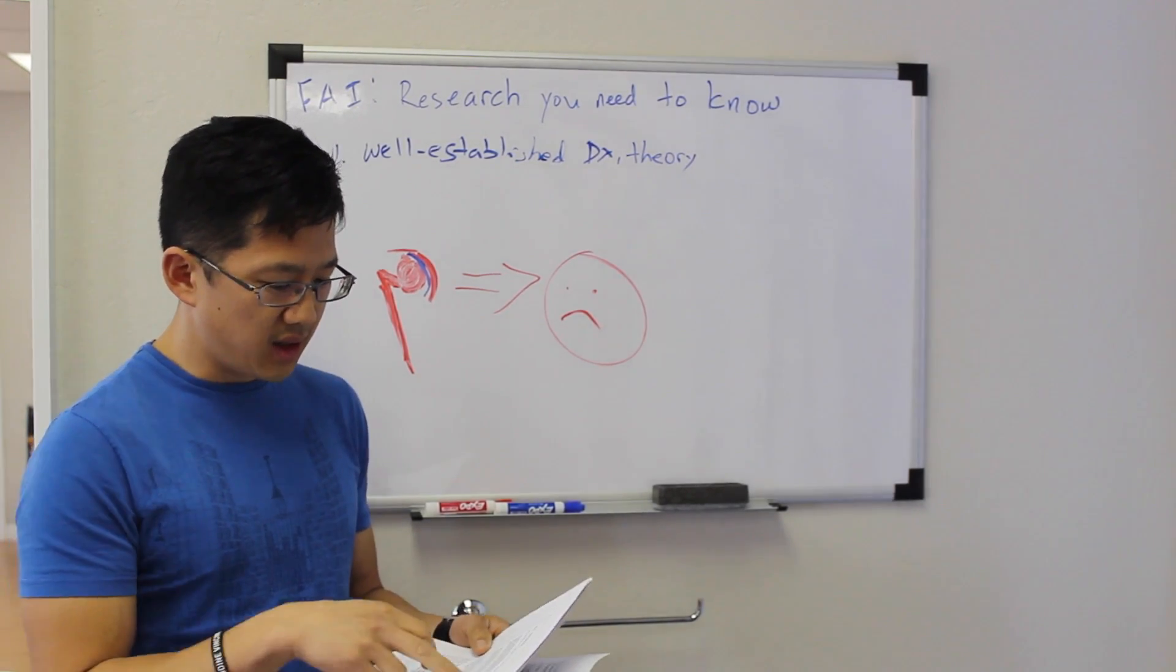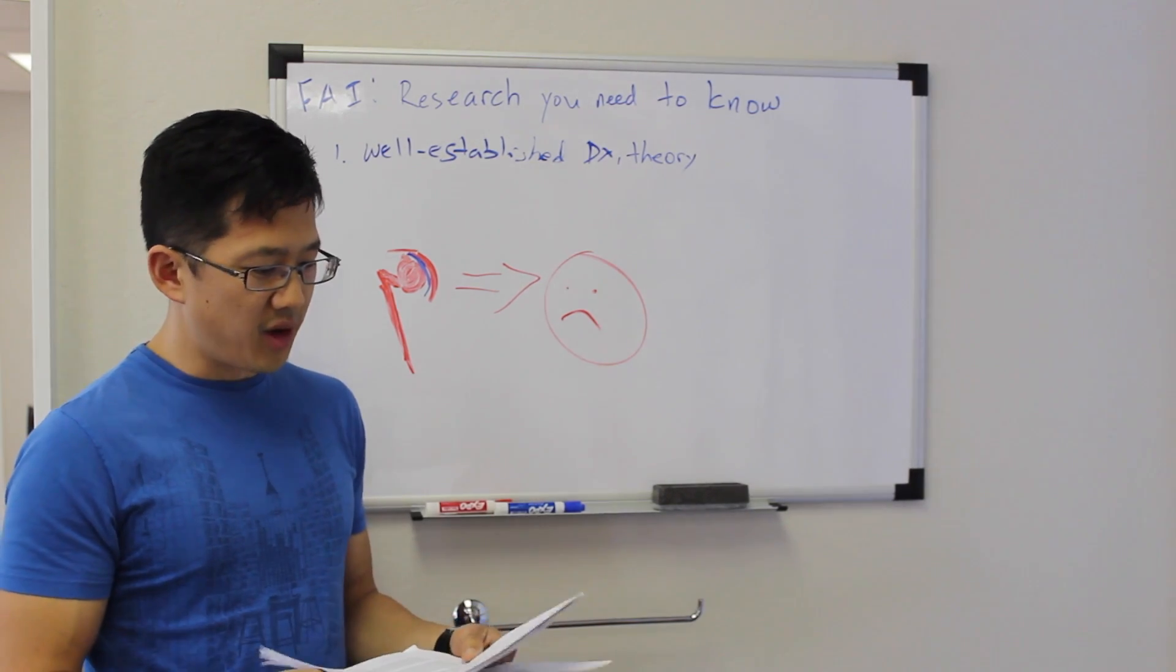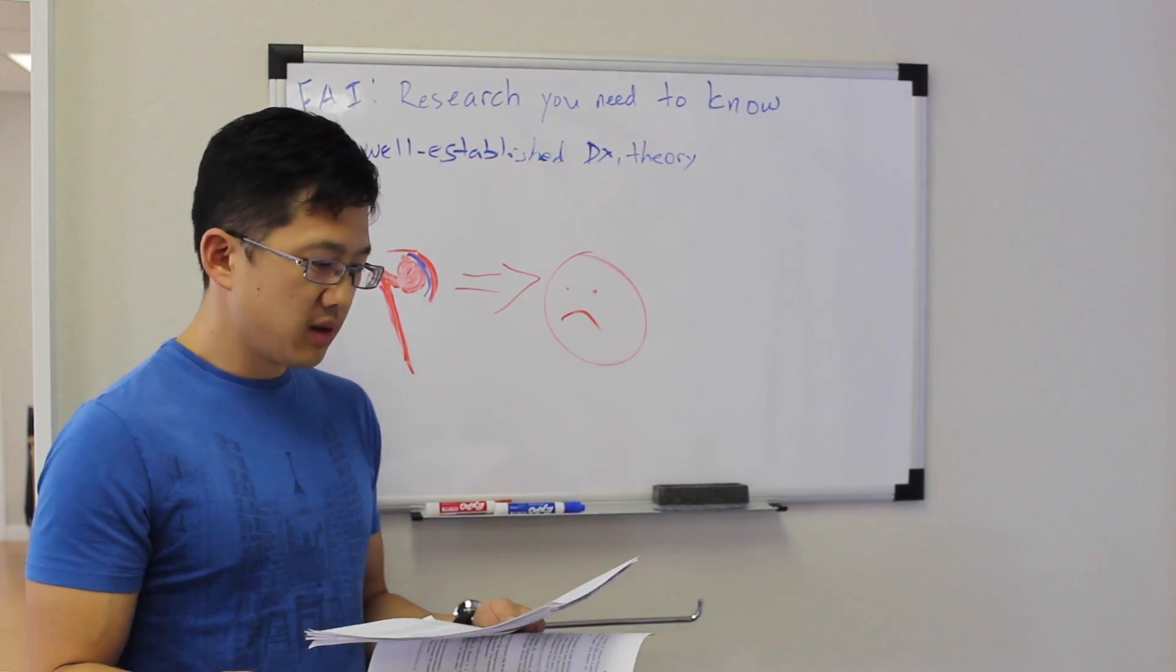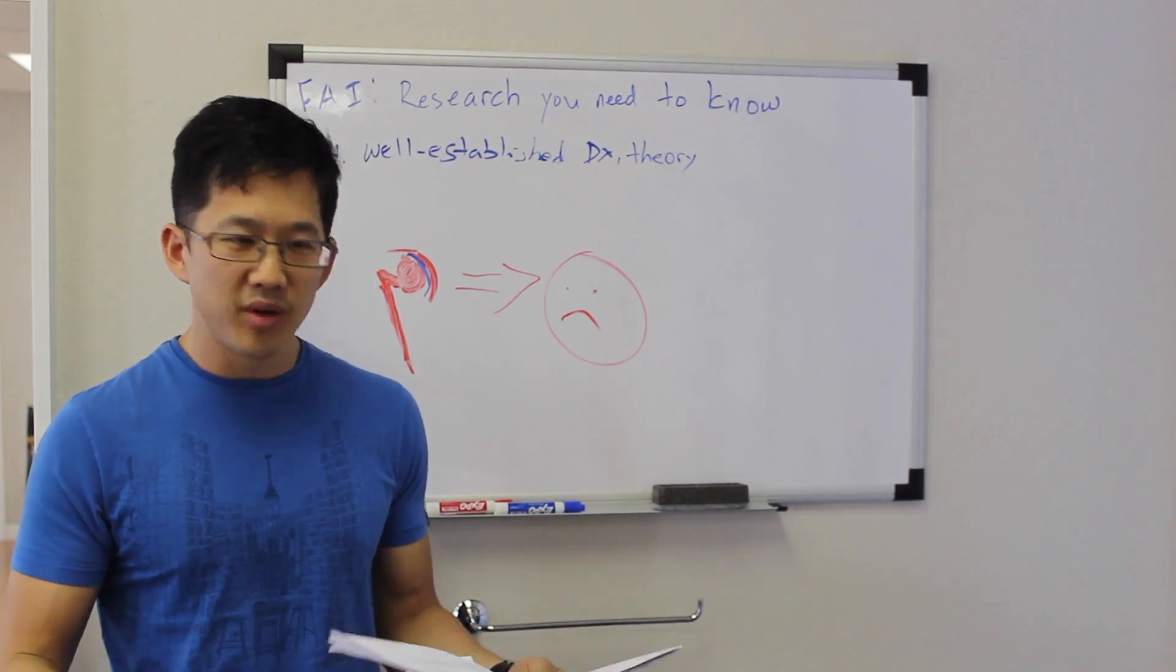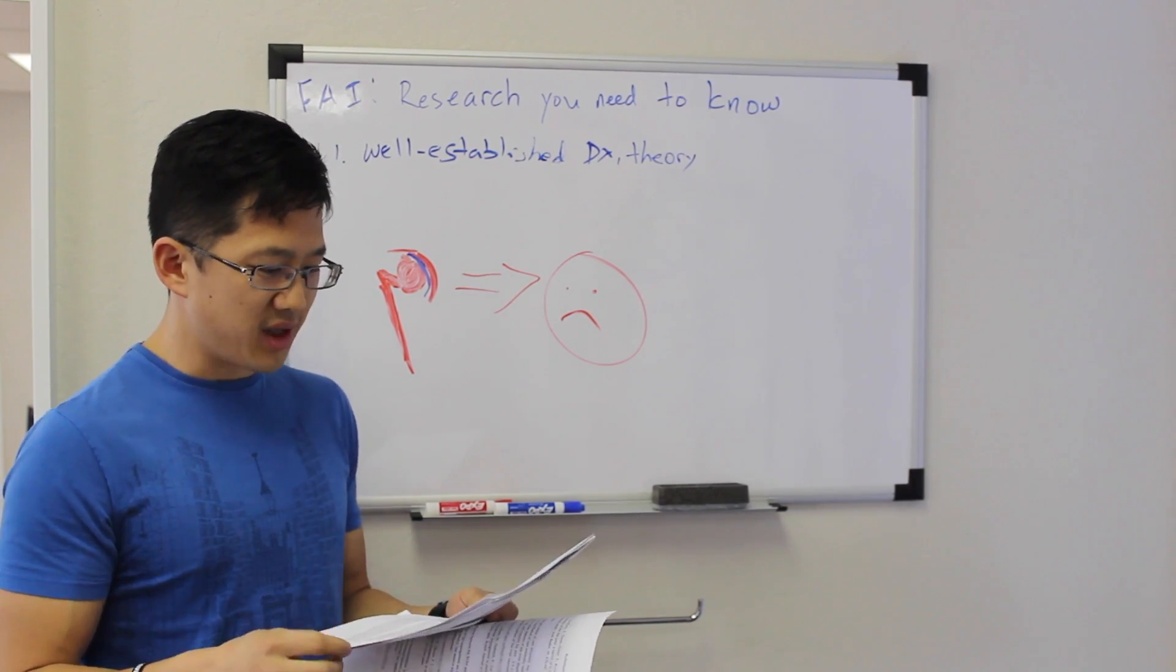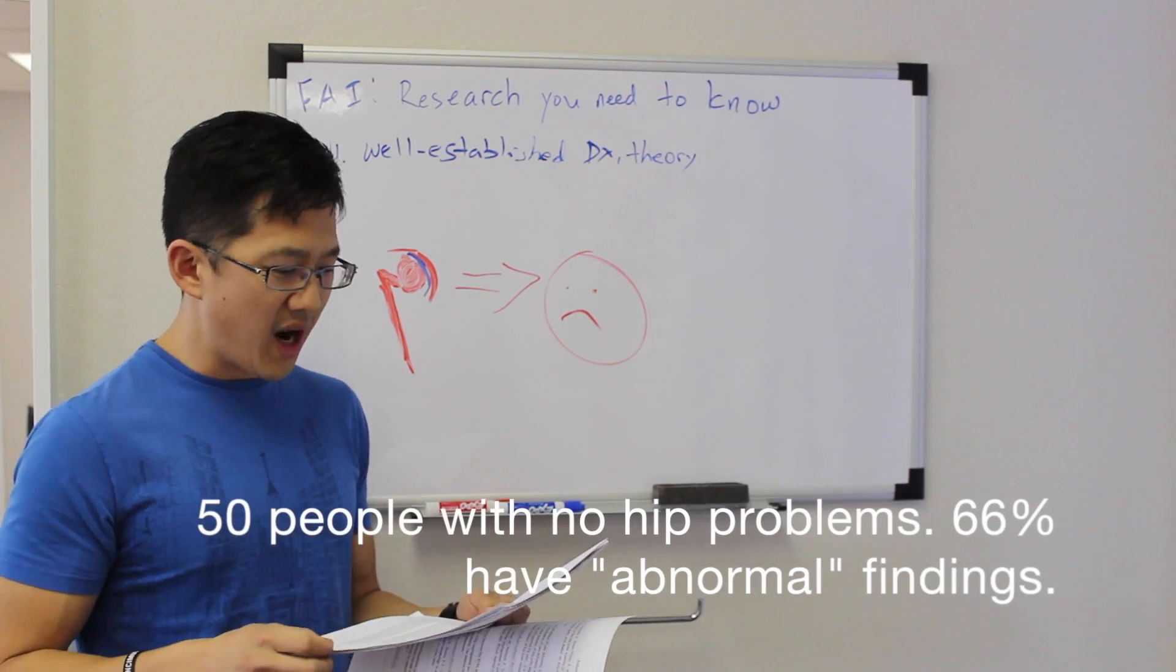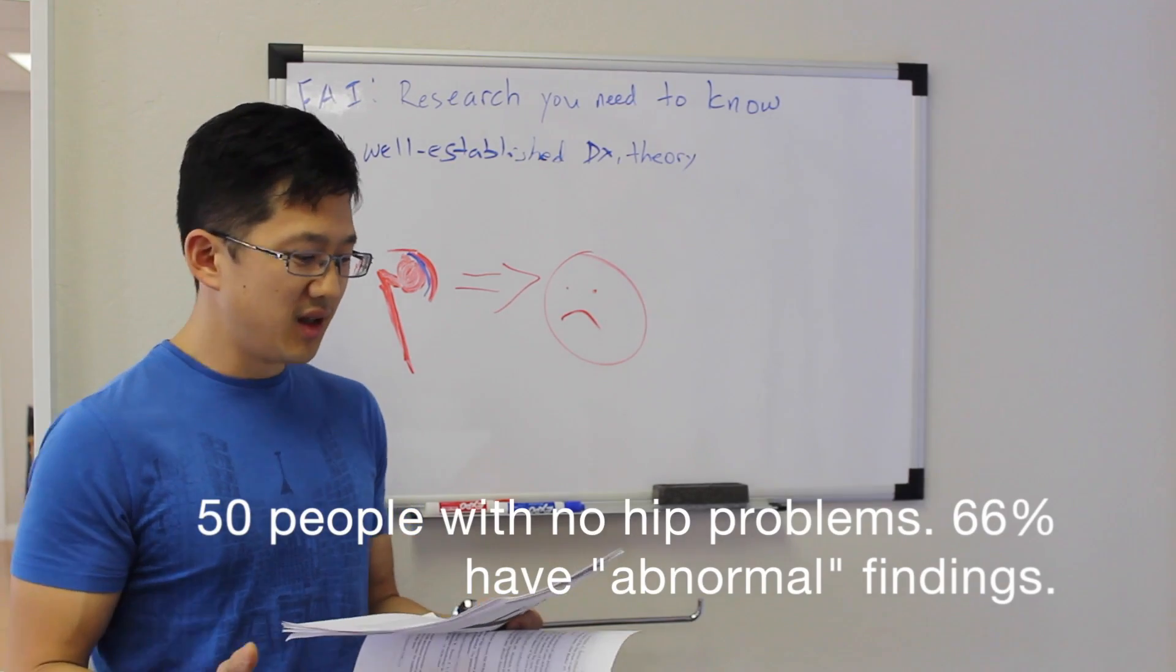So in a study called CT findings of features resembling femoral acetabular impingement in a young population without symptoms. Okay, so this was a study done with 50 patients from ages 20 to 40, all of whom had no symptoms. Zero symptoms. These are 50 very healthy people, no problems. And so what they found was that at least one abnormal parameter was present in 66% of joints. And two or more abnormal parameters were present in 29% of joints.